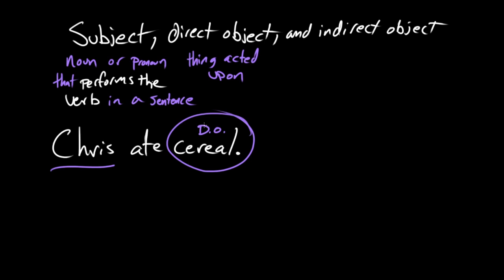So every sentence has to have a subject — subject is critical. But direct objects and indirect objects, less so. We could just have "Chris ate," right? But if we want to bring in this direct object, we can say "Chris ate cereal." So who's doing the eating? Chris. What is the thing that was eaten? Cereal.